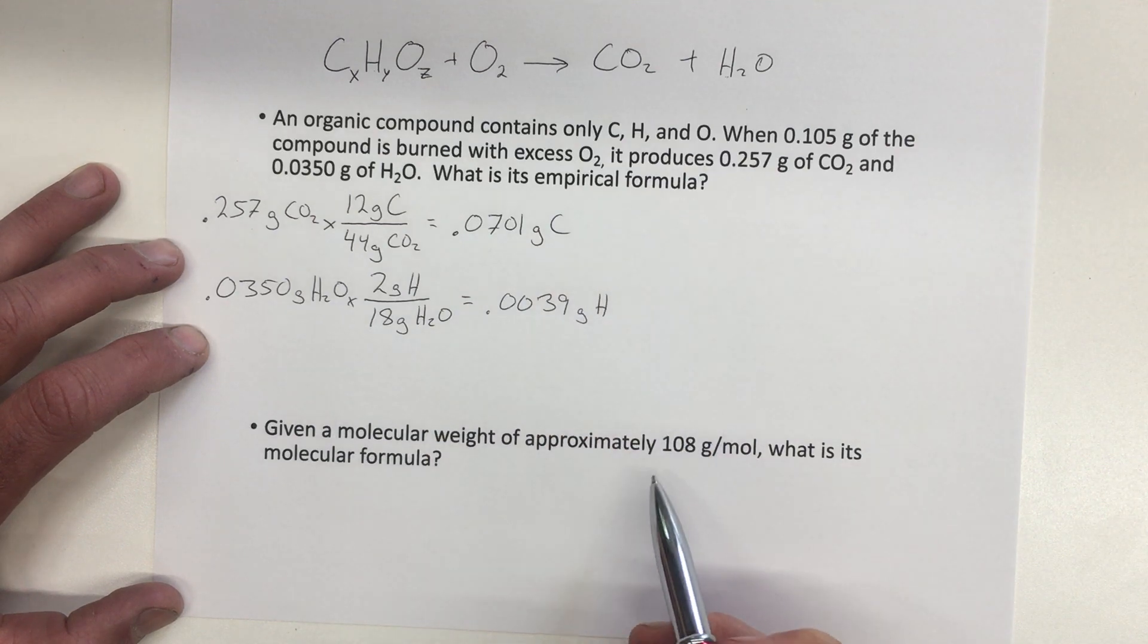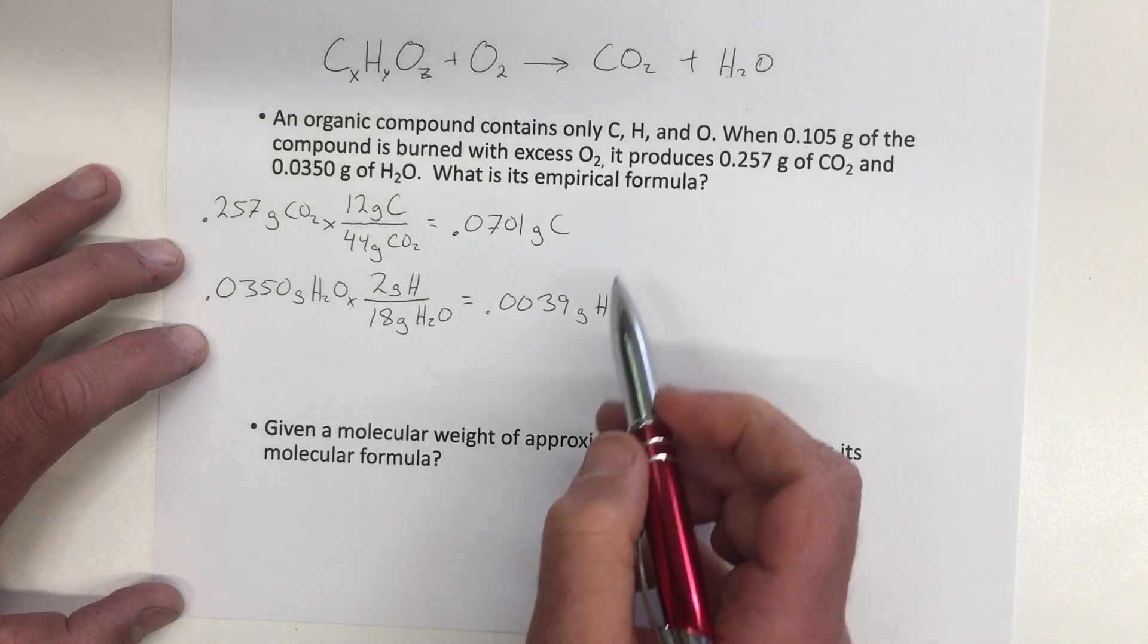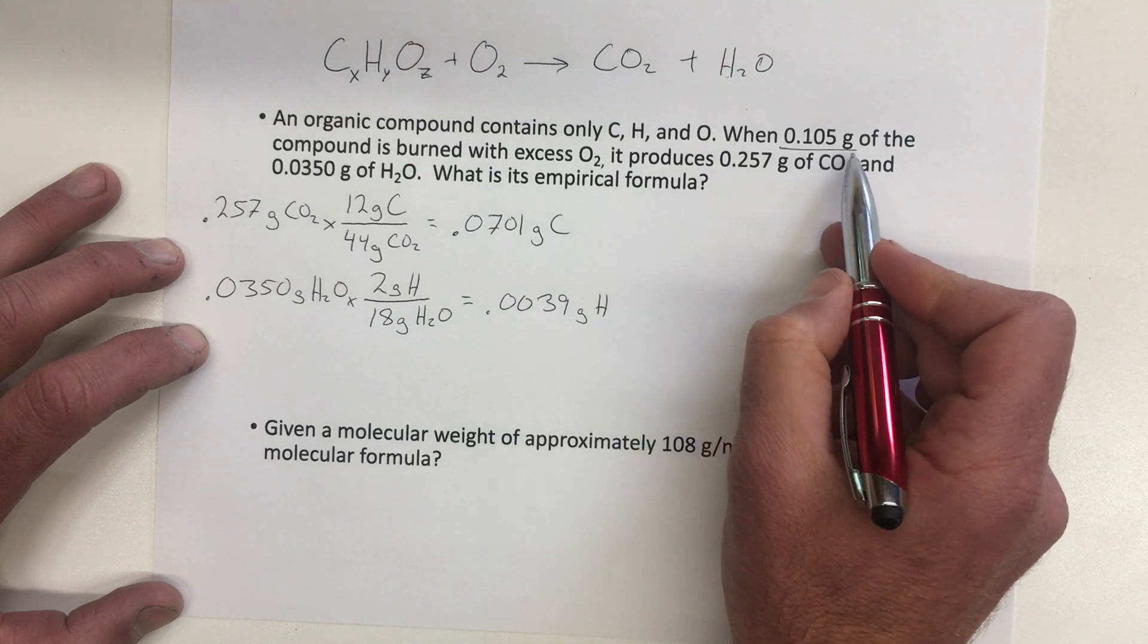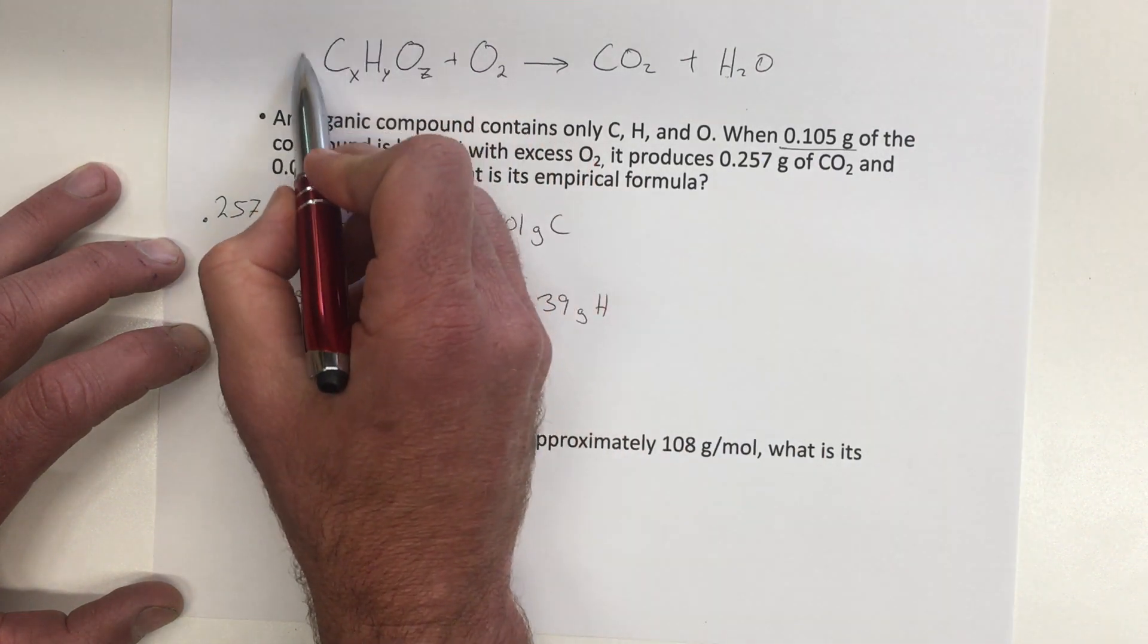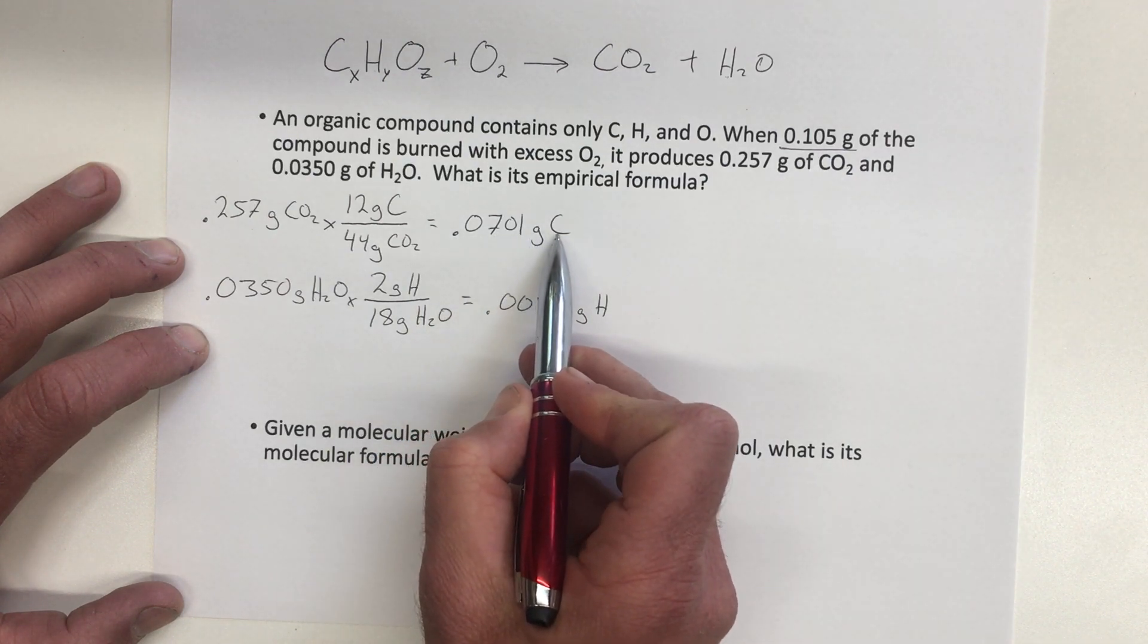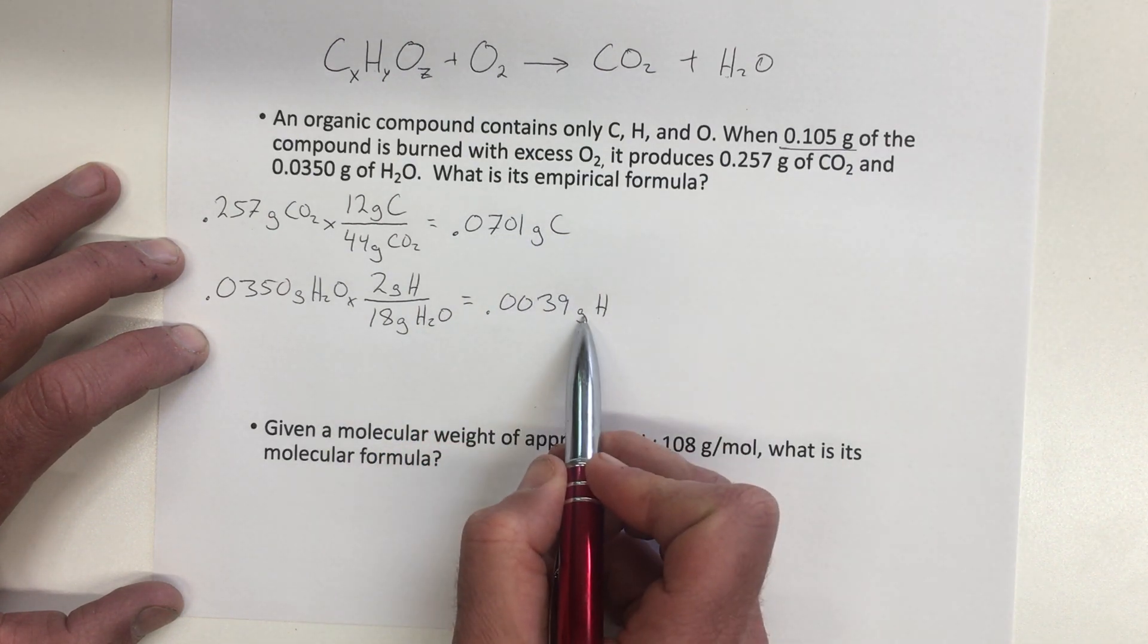The next thing we need to do is figure out how much oxygen there was. So we're starting out with 0.105 gram sample total, so that's the total mass of this sample. And of that, 0.0701 grams were carbon, and this much was hydrogen.